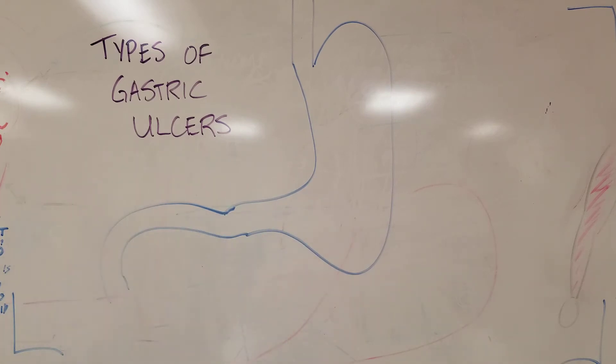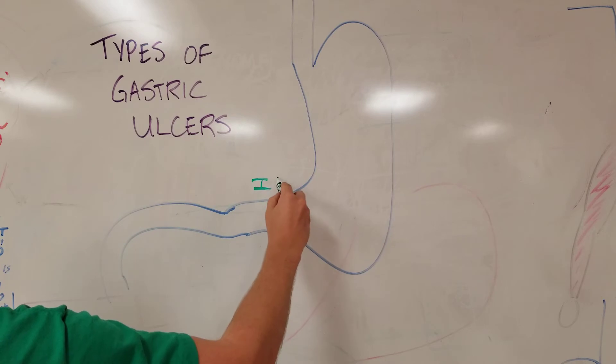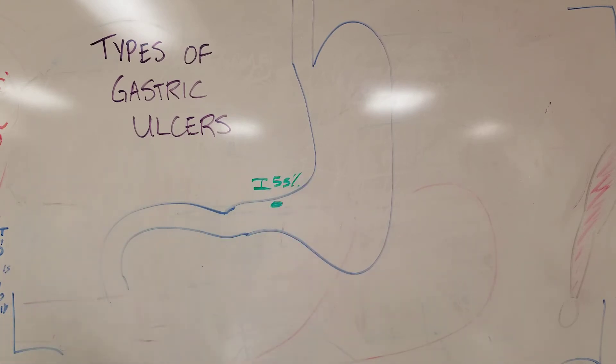The first type of gastric ulcers is the most common one and that is a solitary ulcer in the antrum. This is type 1 and it happens about 55% of the time. 55% of peptic ulcers will be a type 1.